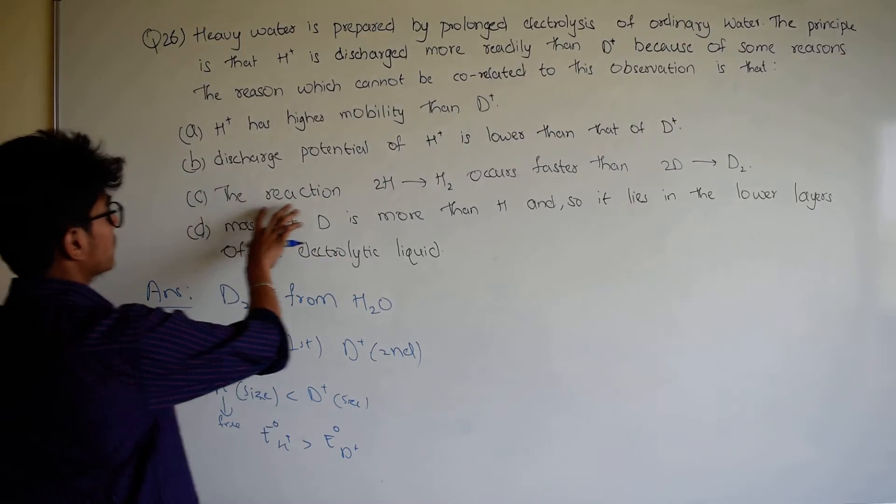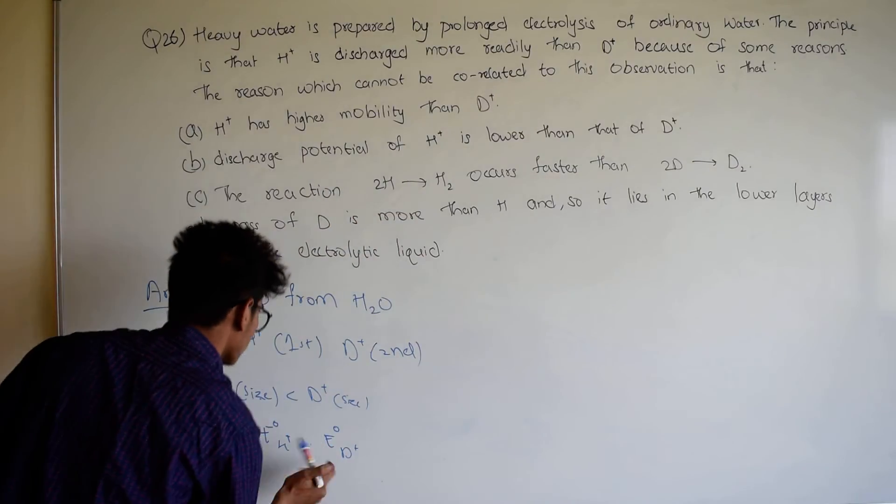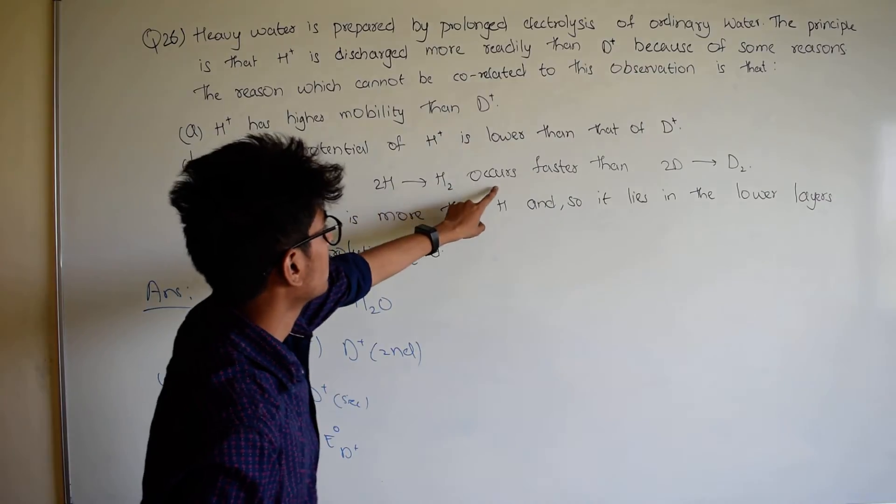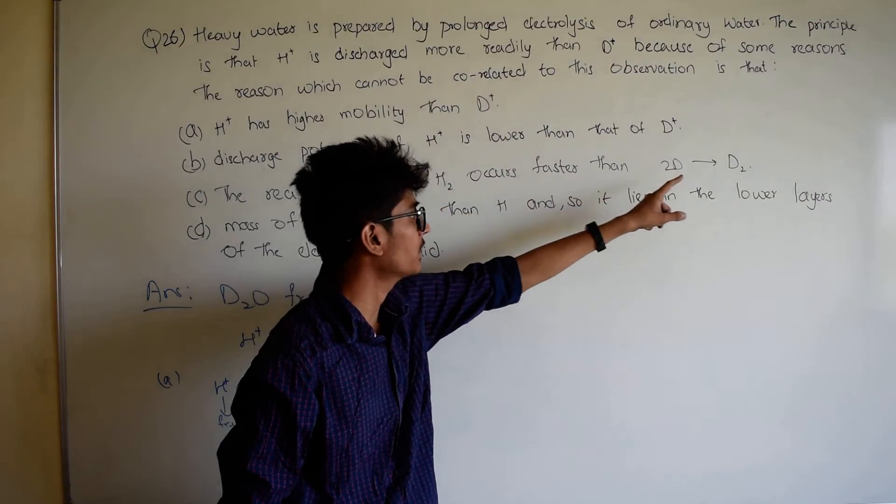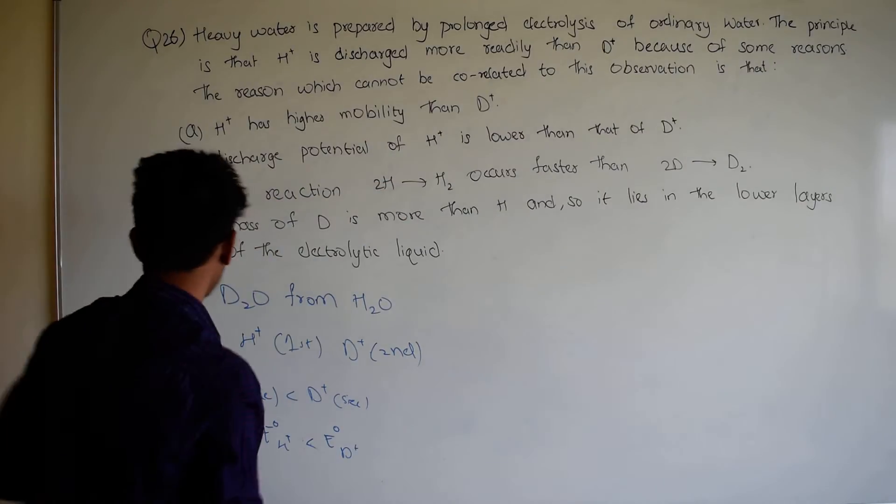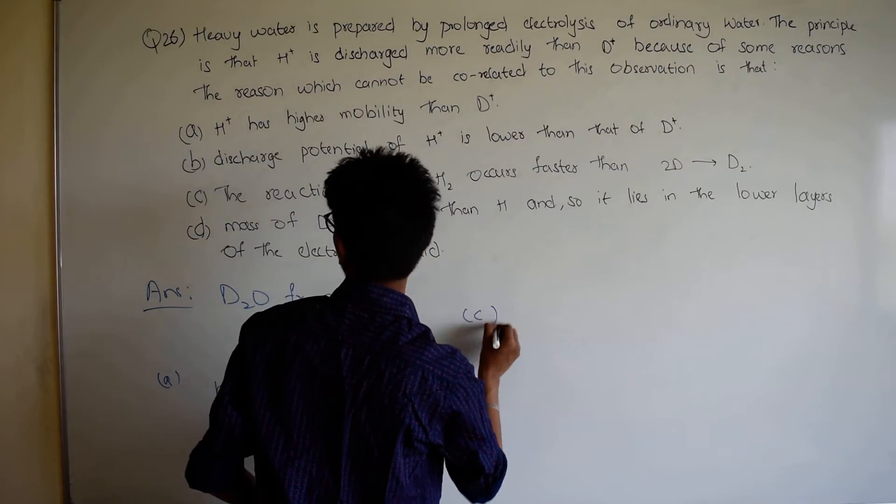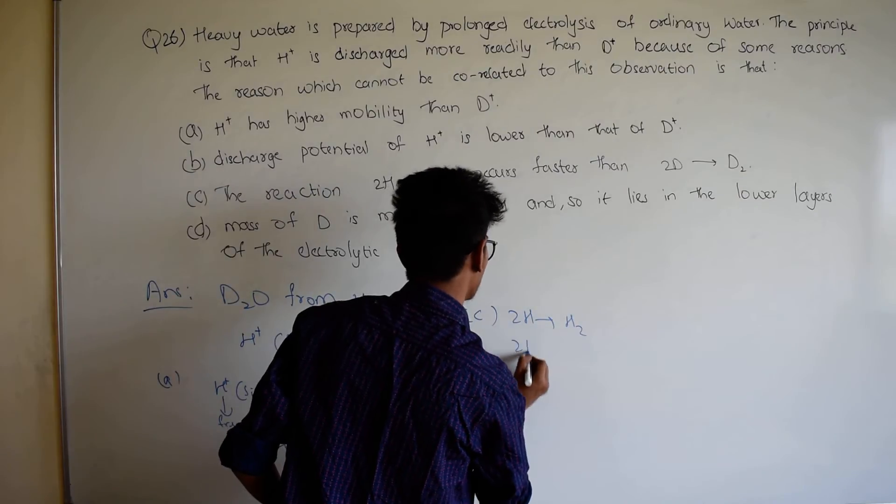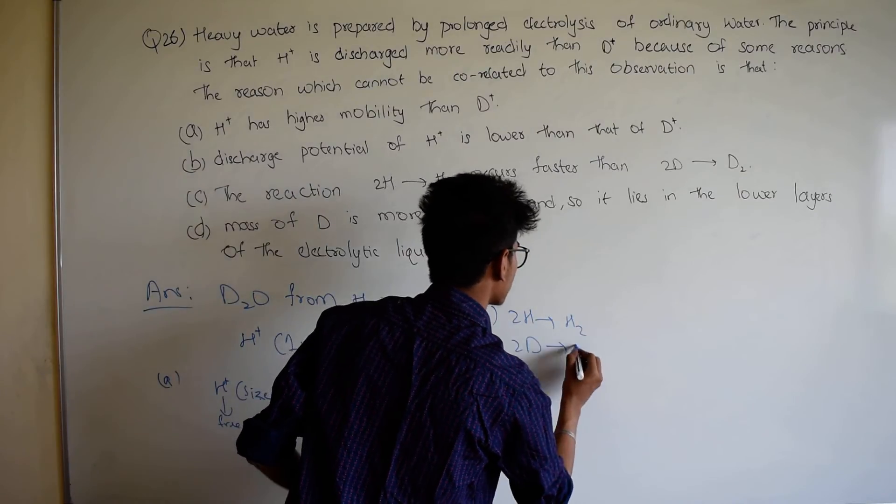The reaction 2H giving H2 occurs faster than 2D giving D2. And 2H and a reaction H2 is formed. C option: 2H and H2 means H2 and 2D and D2.